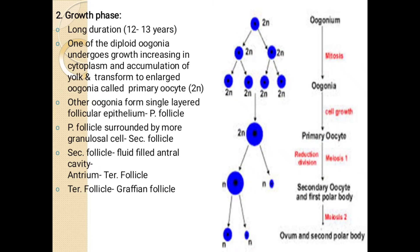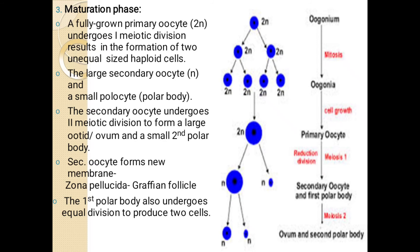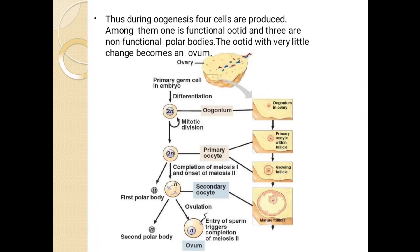Meiosis 2 division occurs, from which one ovum is formed and one second polar body is formed. After formation, the mature motile ovum is formed. The secondary oocyte undergoes second meiotic division to form a large ovum and second polar body. Secondary oocyte forms zona pellucida in the Graafian follicle, and the first polar body undergoes equal division to produce two cells. During oogenesis, four cells are produced — among them one is functional and three are non-functional polar bodies.